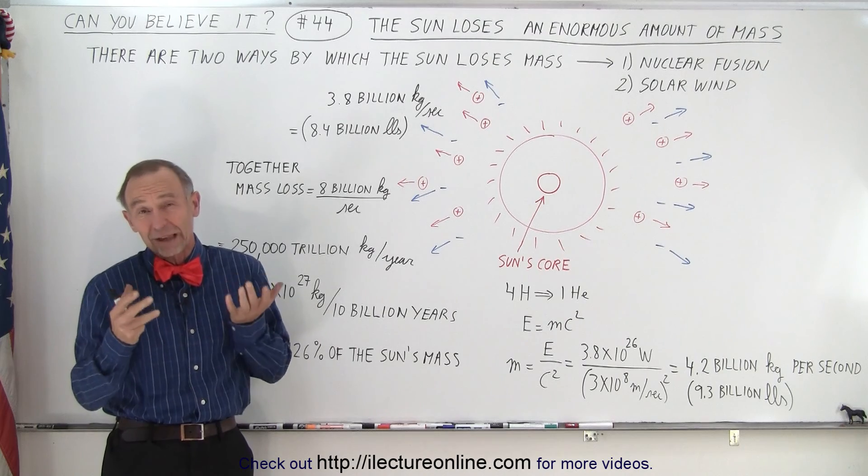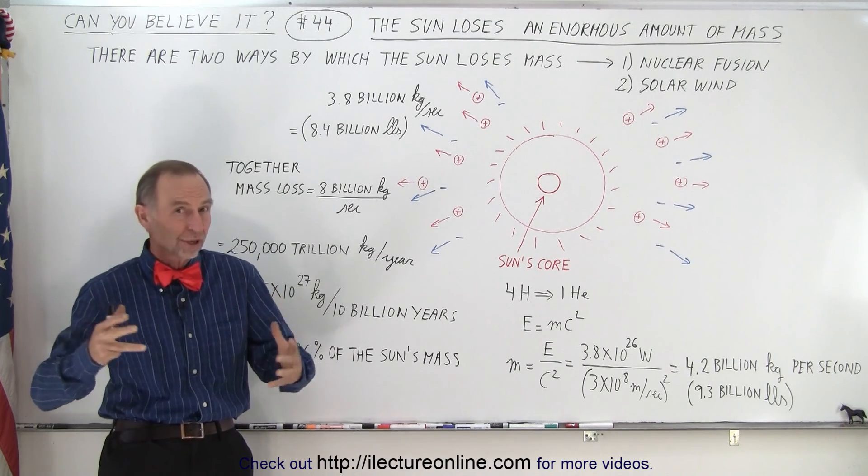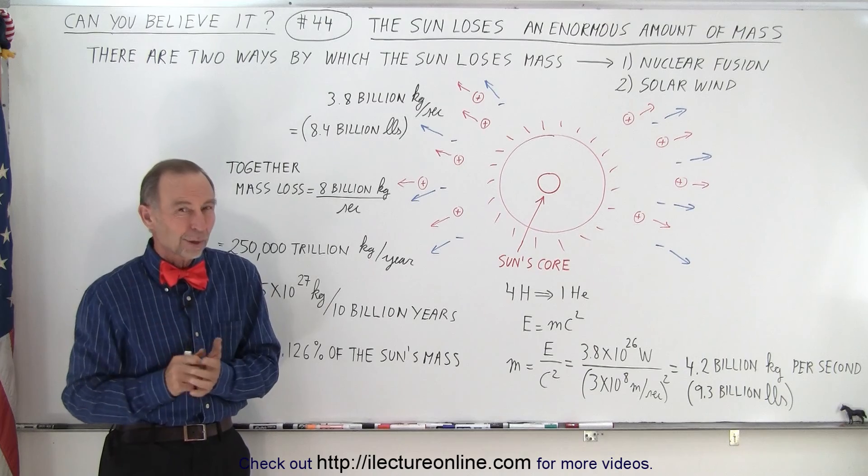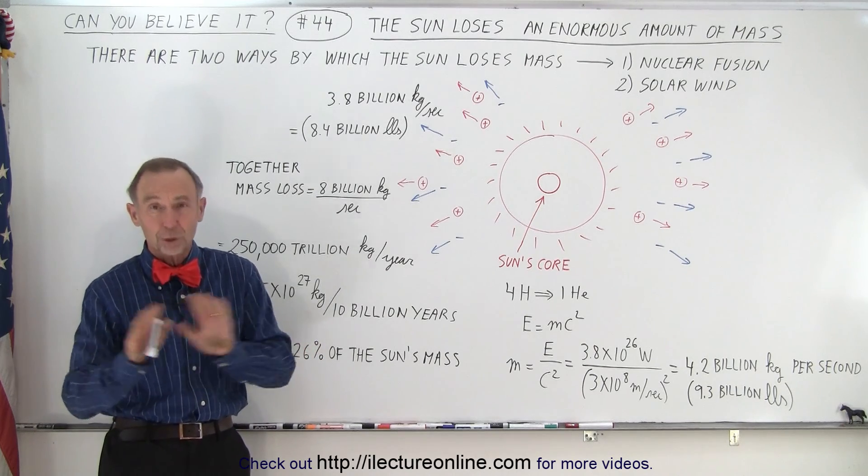So our sun will last about 10 billion years before it turns into a red giant. Once it turns into a red giant, life on earth will no longer be possible.